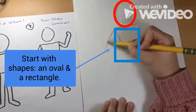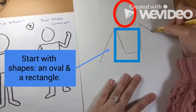Start with shapes. For example, an oval for the head and a rectangle for the torso.